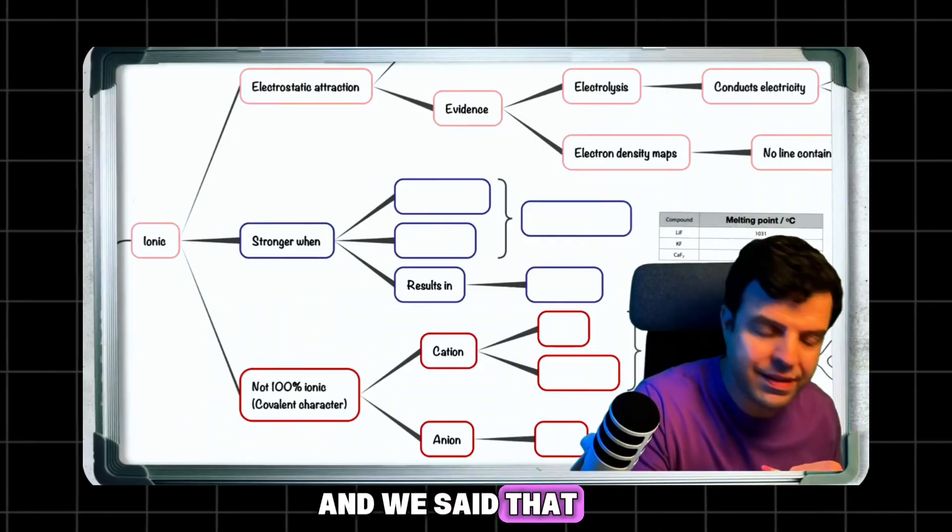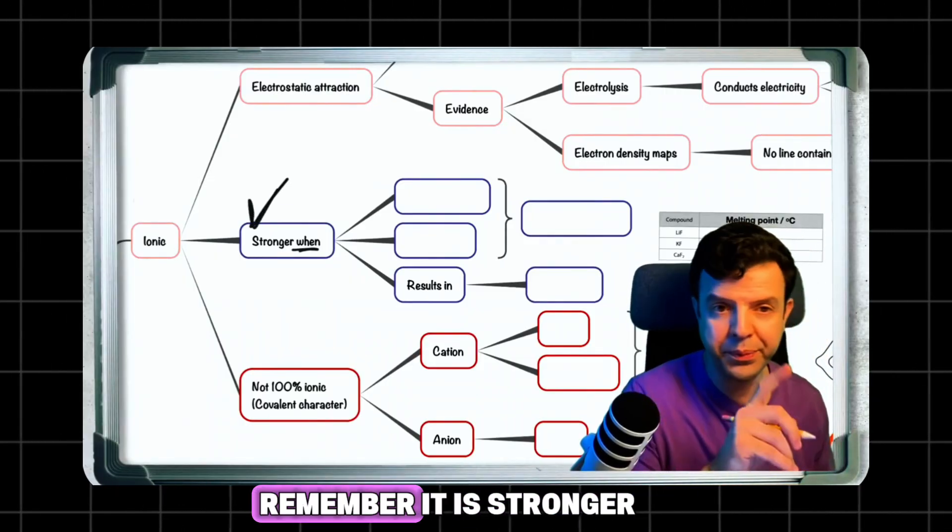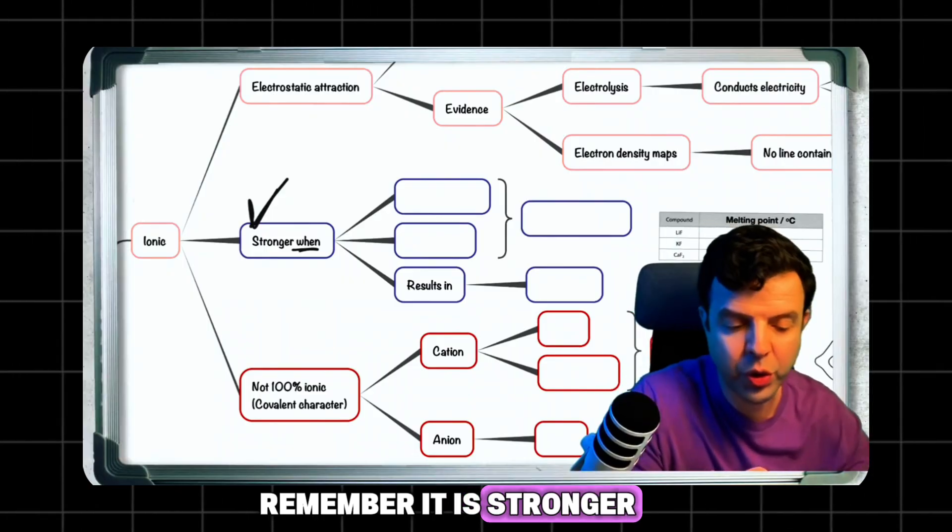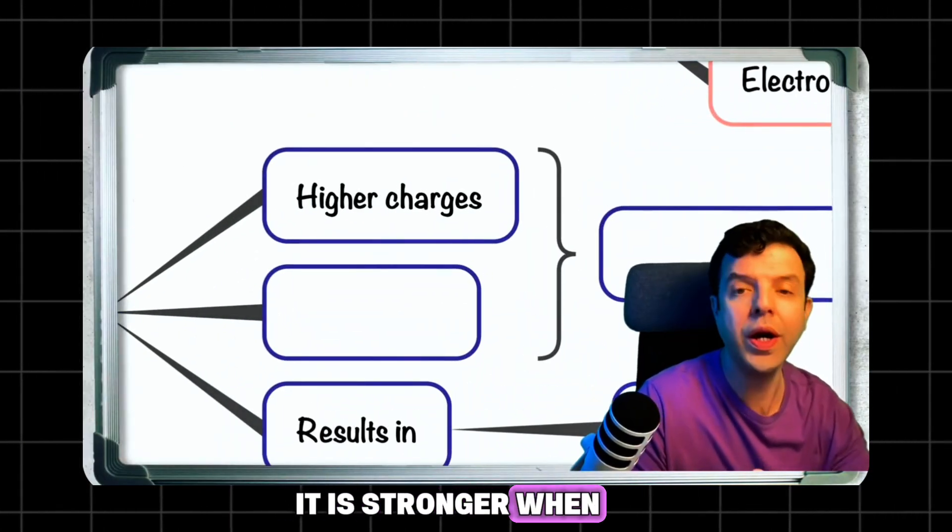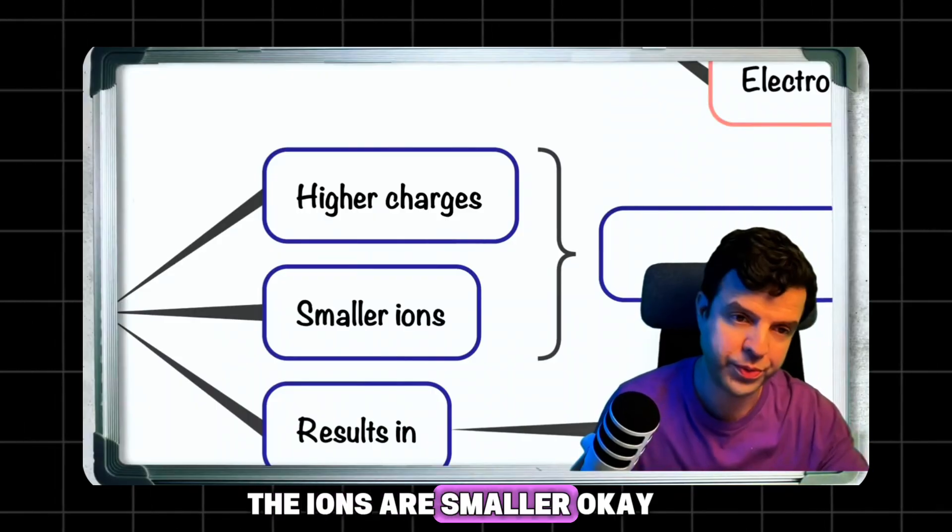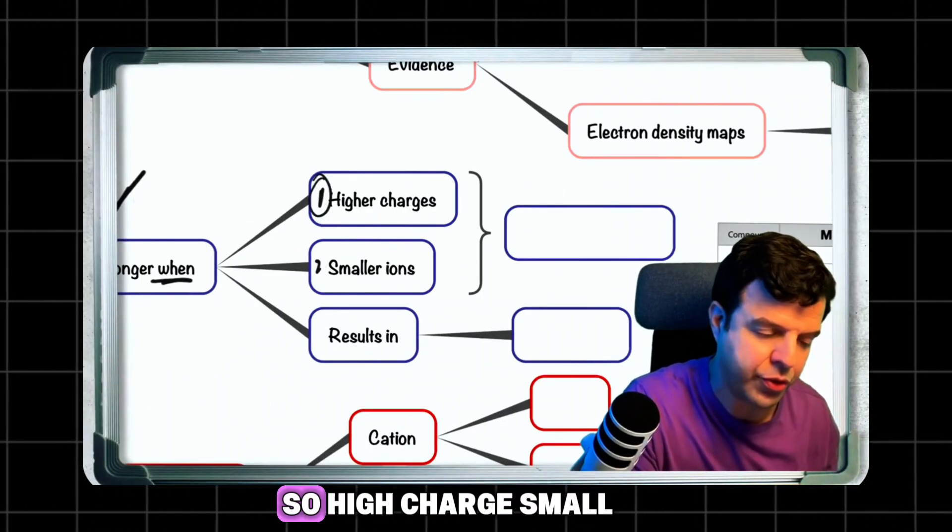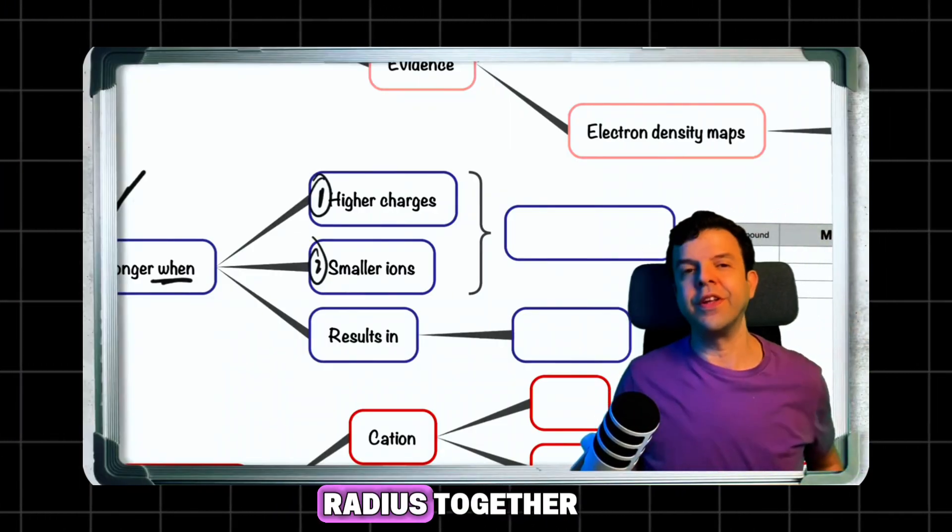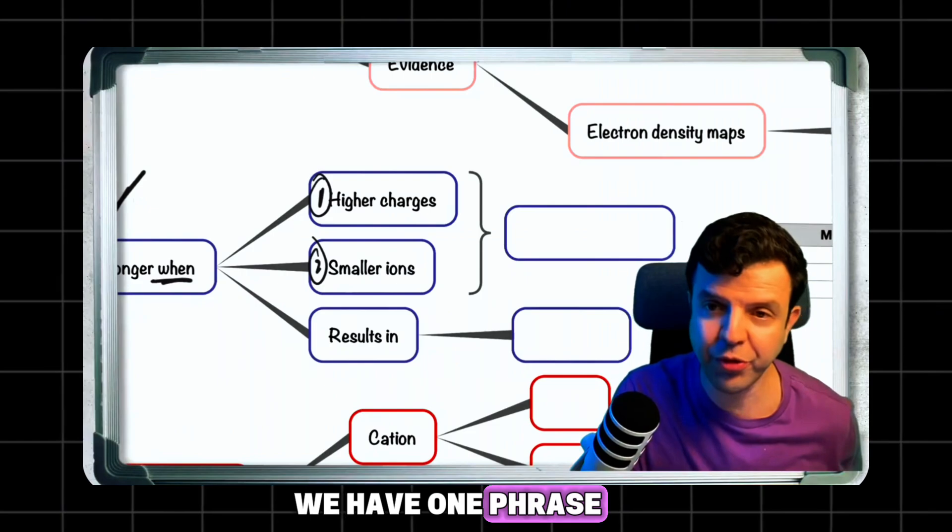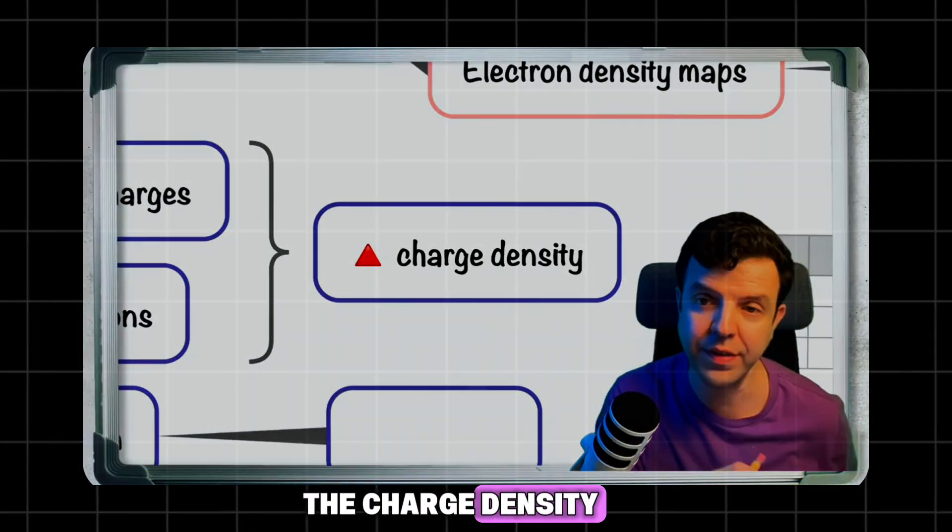Ionic bonding is stronger when the ions are smaller. High charge and small radius together - we have one phrase to identify that: charge density.